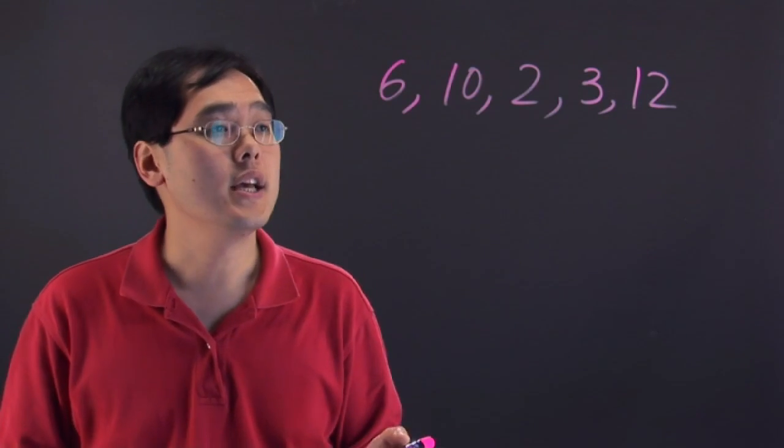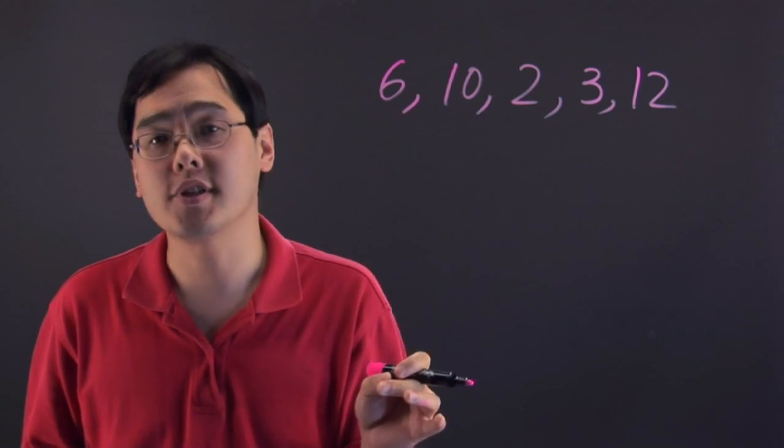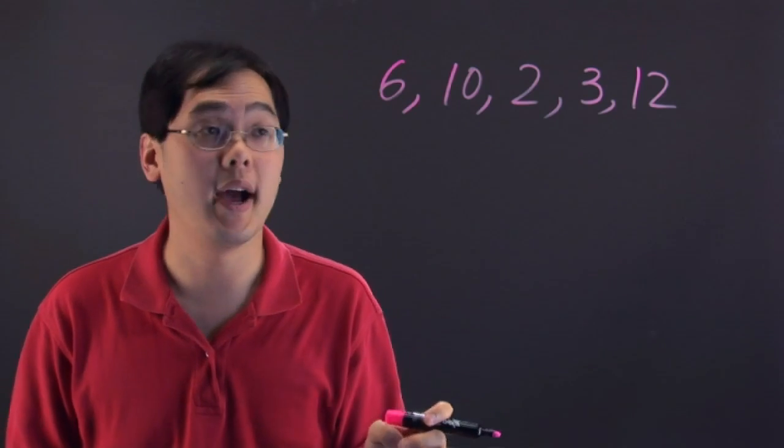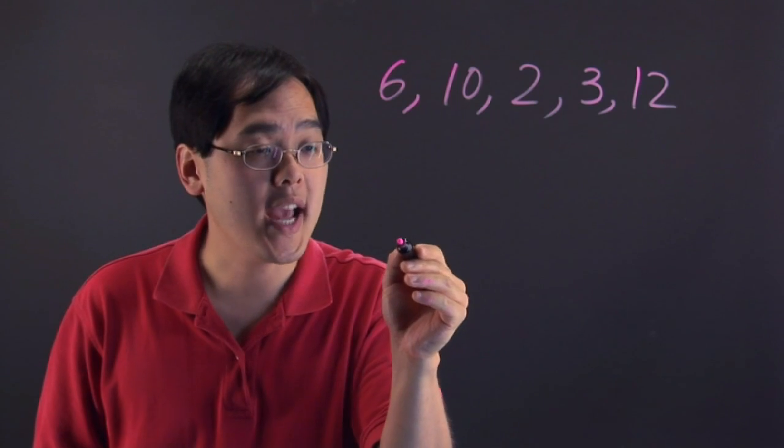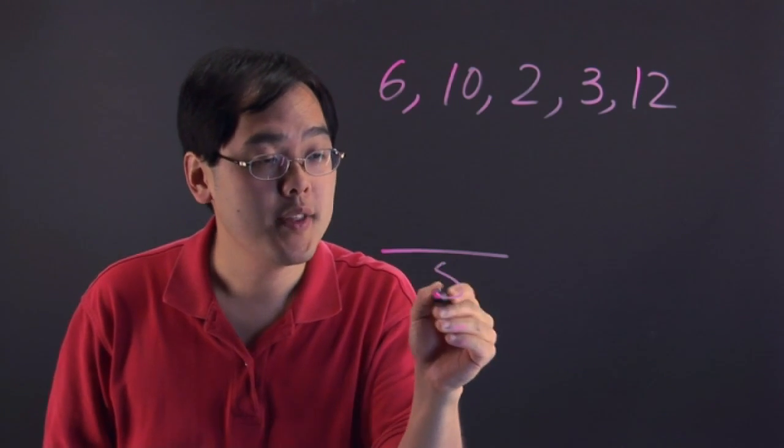The important thing about averaging is you want to think about how many numbers that you have, because that's what you're going to be dividing by. Here we have 1, 2, 3, 4, 5, so at the end of the day, to find out the averages, you need to divide by the number 5.